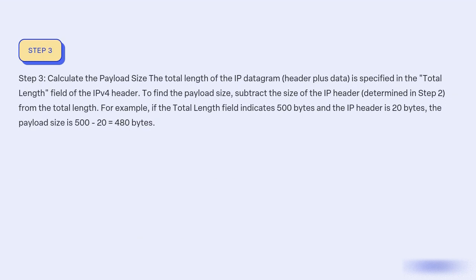Step 3: Calculate the payload size. The total length of the IP datagram — header plus data — is specified in the total length field of the IPv4 header. To find the payload size, subtract the size of the IP header determined in step 2 from the total length. For example, if the total length field indicates 500 bytes and the IP header is 20 bytes, the payload size is 500 − 20 = 480 bytes.